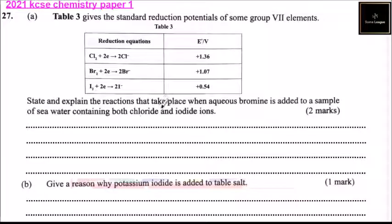But we are told, state and explain the reactions that take place when aqueous bromine is added to a sample of seawater containing chloride and iodine ions. So what will happen is that we have bromine, which is in aqueous form, we have chloride ions, and we add bromine to these ions. And this will give you bromine ions and iodide in aqueous form.